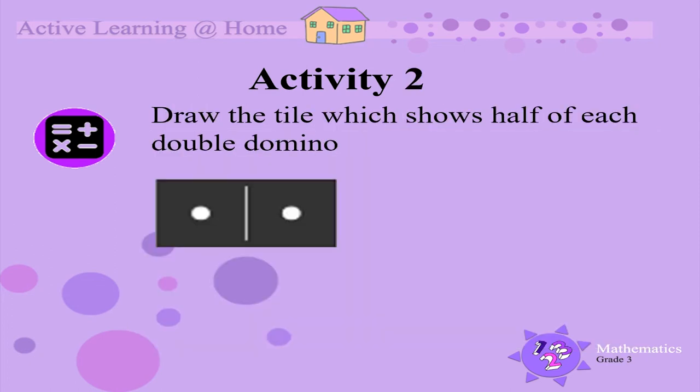Activity 2. Draw the tile which shows half of each double domino. Let's do the first one together. In total there are 2 dots. Half of the double domino is 1 dot.